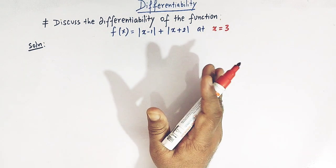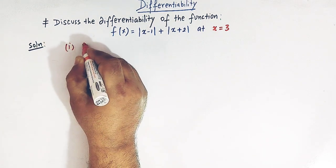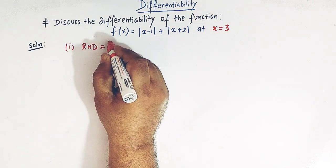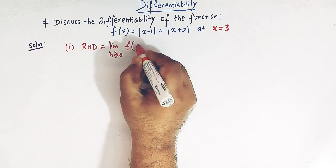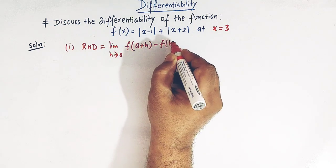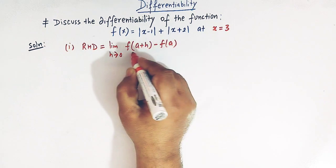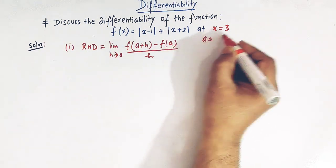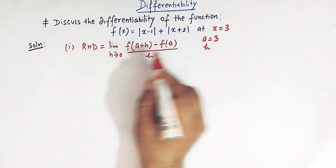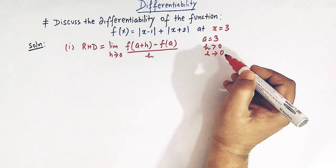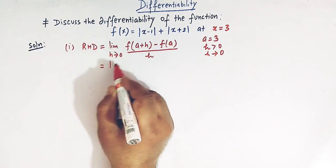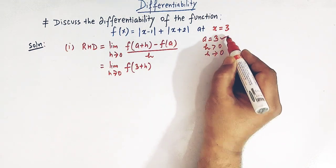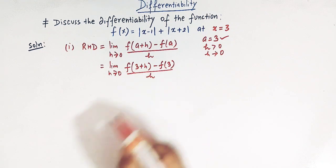Let us first find the right hand derivative. The definition of the right hand derivative at x = 3 is given by the limit h tends to 0 of f(a + h) - f(a) divided by h, where a = 3 and h is a positive quantity tending to 0. So we write: limit h tends to 0 of [f(3 + h) - f(3)] / h.